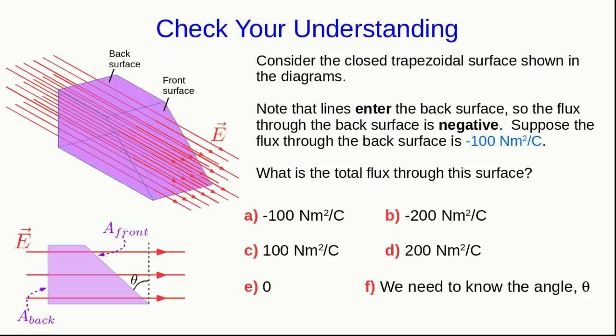So, it's time for you to figure it out. Here is the surface in both views that I've showed you, and note that the lines come in the back surface, and so, as I've already pointed out, the flux through the back surface is, by definition, negative.